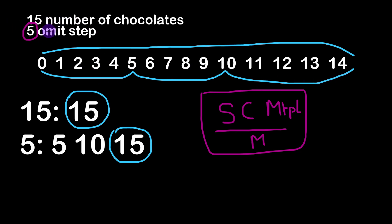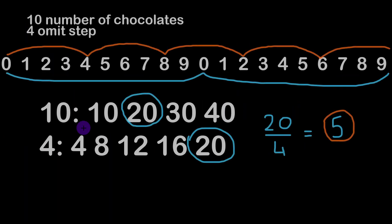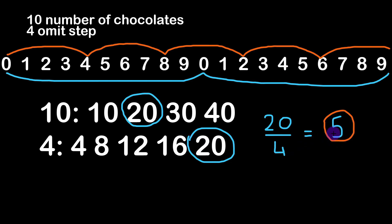Here's one more example: 15 chocolates with a step of 5. The least common multiple is 15, and if we divide 15 by M (the step) we get 3, so we have 3 eaten chocolates. Going back to the original example from the problem, the least common multiple is 20 divided by the step length of 4, which gives 5. So in total we ate five chocolates, which is correct.